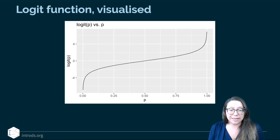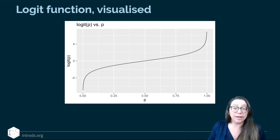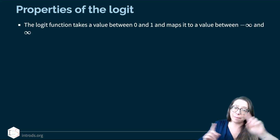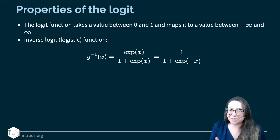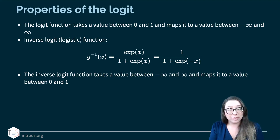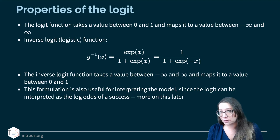Here is the logit function visualized: p ranges between zero and one, and logit(p) on the y-axis goes from negative infinity to positive infinity. But that's not exactly what we need — we need the opposite. So we take the inverse logit, or logistic function, which takes a value between negative infinity and positive infinity and maps it to a value between zero and one, enabling us to calculate a predicted probability. This is also useful for interpretation since the logit can be interpreted as the log odds of a success.